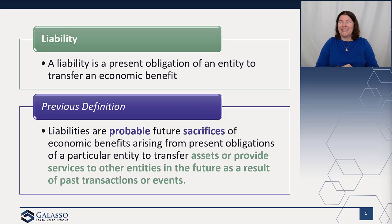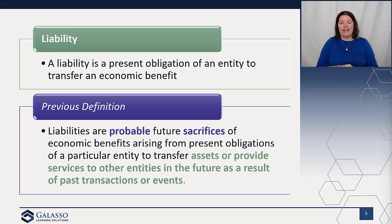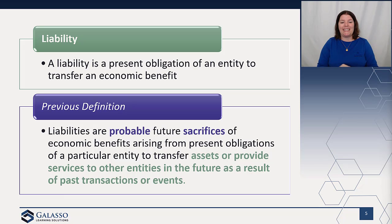Similarly, a liability is also significantly reduced — no more discussion of probable future sacrifices, and the concept of result of past transactions or events is removed. A liability is simply a present obligation of an entity to transfer an economic benefit. Obligations can come from legal contracts, statutes or laws, or any other source upheld by a judicial system. These broader definitions make it easier to recognize liabilities such as the performance obligation for revenue recognition and the lease liability.